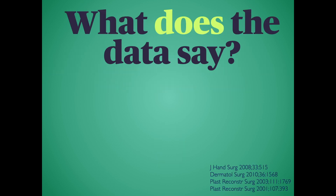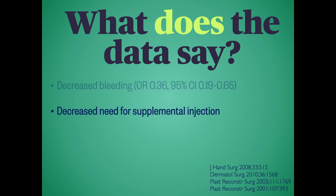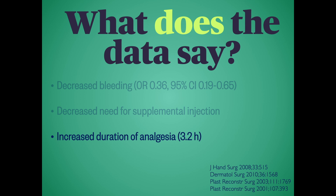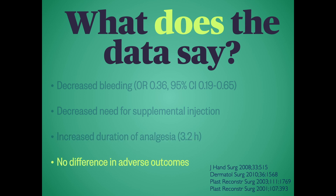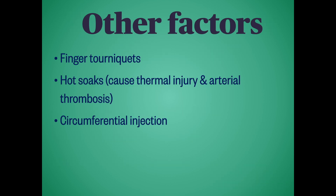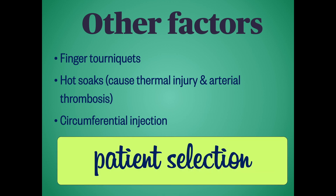If you use epinephrine in digital blocks, you can expect to see decreased bleeding, decreased need for additional injections, longer-lasting pain relief, and importantly, no difference in adverse outcomes. There are some things that are bad for fingers and can lead to ischemia: finger tourniquets and hot soaks are largely a thing of the past and were notorious amongst hand surgeons for causing mechanical and thermal injury as well as arterial thrombosis. Circumferential injection is theoretically a concern as there could be a pressure effect on the small vessels provoking ischemia. Patient selection is important, and if the patient has several other risk factors for vasospasm or vasculopathy, it may be wise, despite the absence of proven harm, to avoid the transient reduction in digital blood flow.